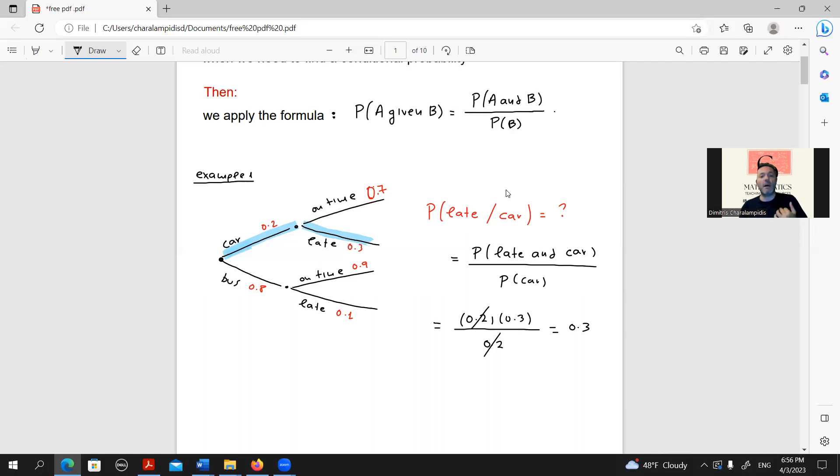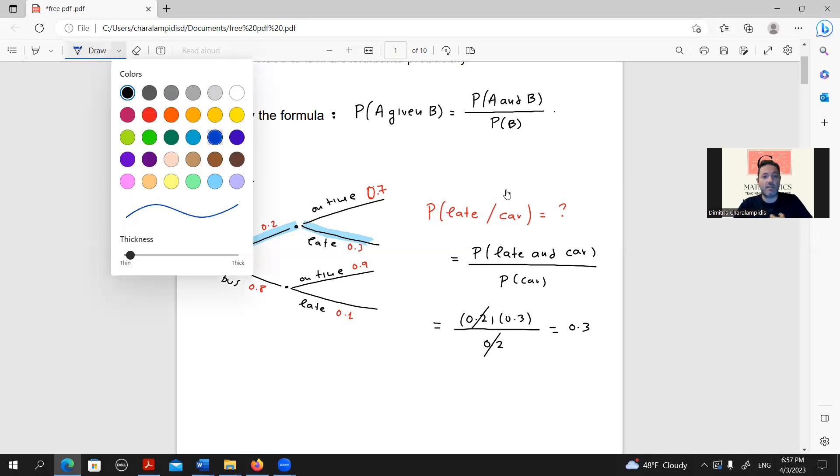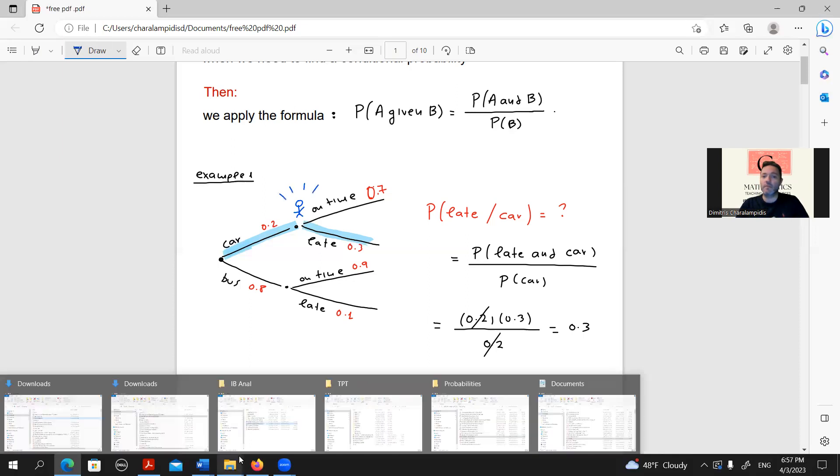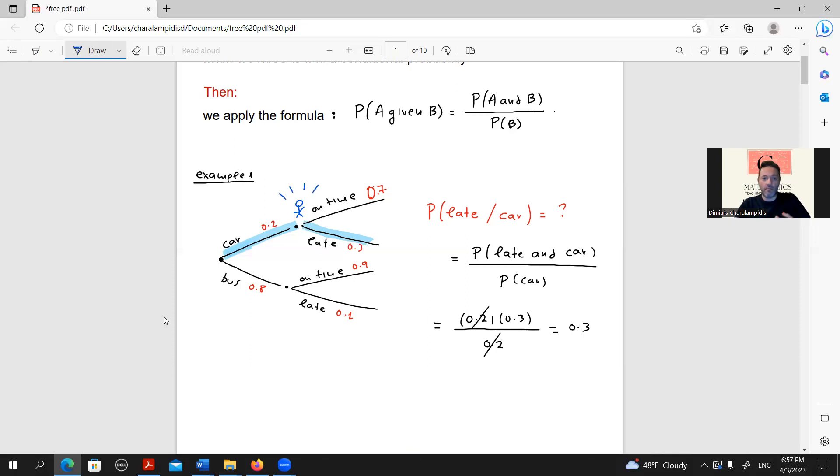So, when I am asked to calculate the probability of being late given that I have used the car, this means that I have already used the car, which means that I am here. So, based on the fact that I am here, I have used the car, what is the probability of being late? Obviously, 0.3.